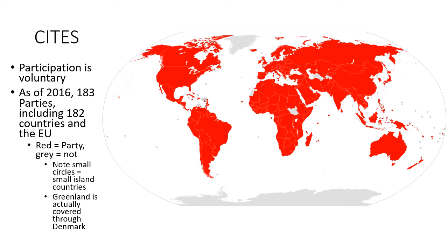On the membership map, red countries are parties and gray ones are not — with the exception of Greenland, which is governed by Denmark. Many island nations in the Pacific and Caribbean, some in the Atlantic, and Antarctica — which is not a nation — are not parties. A couple of African and Asian countries are also non-parties, but most countries are part of CITES.